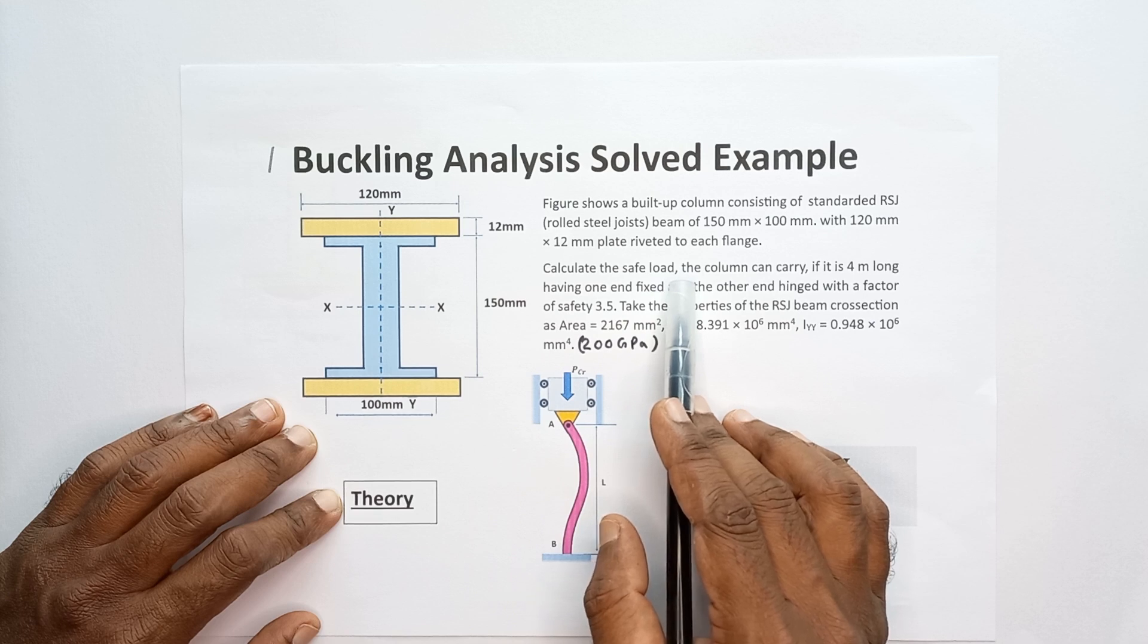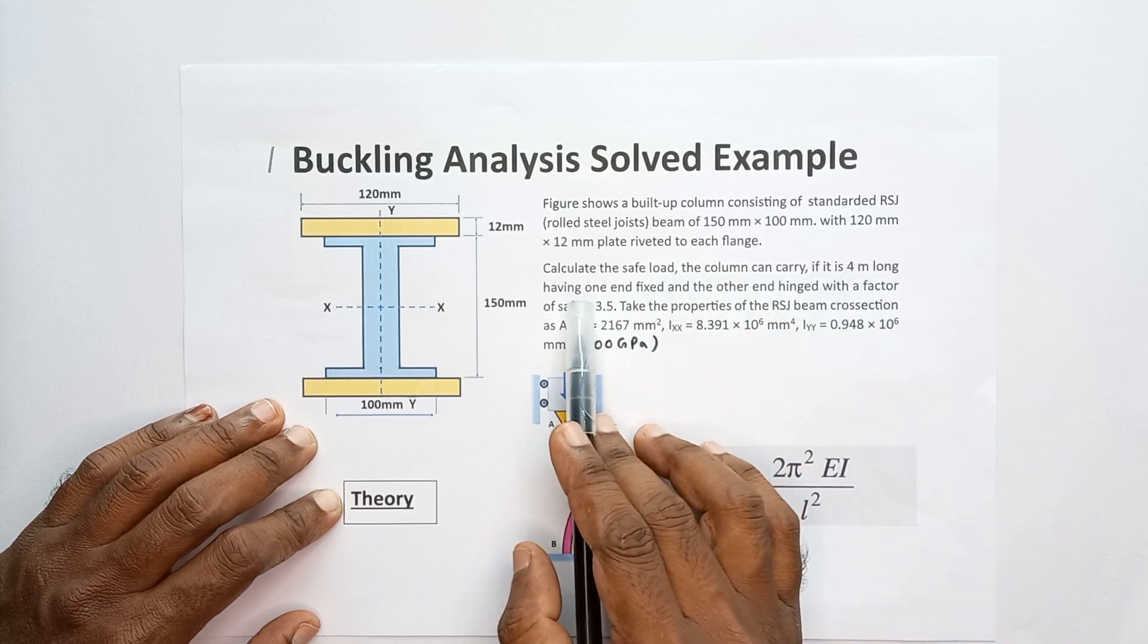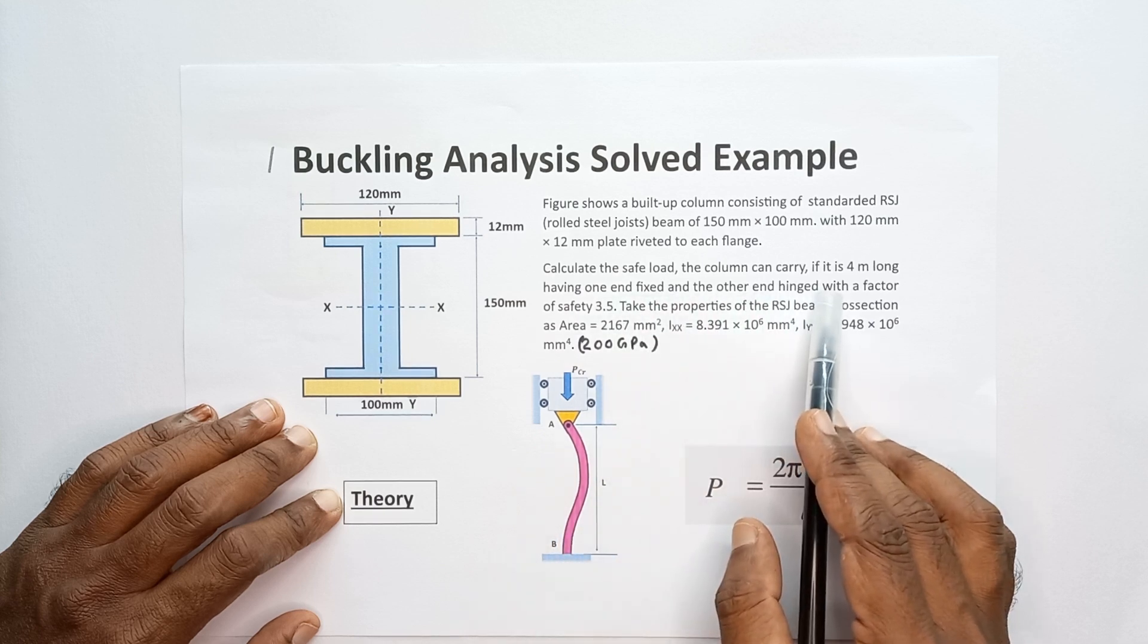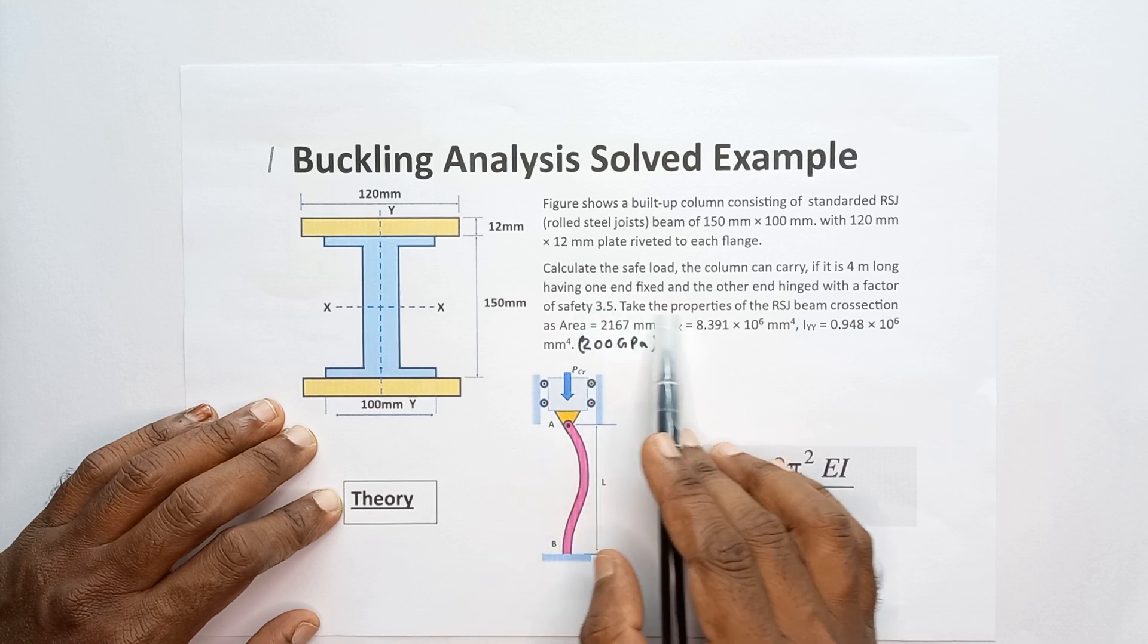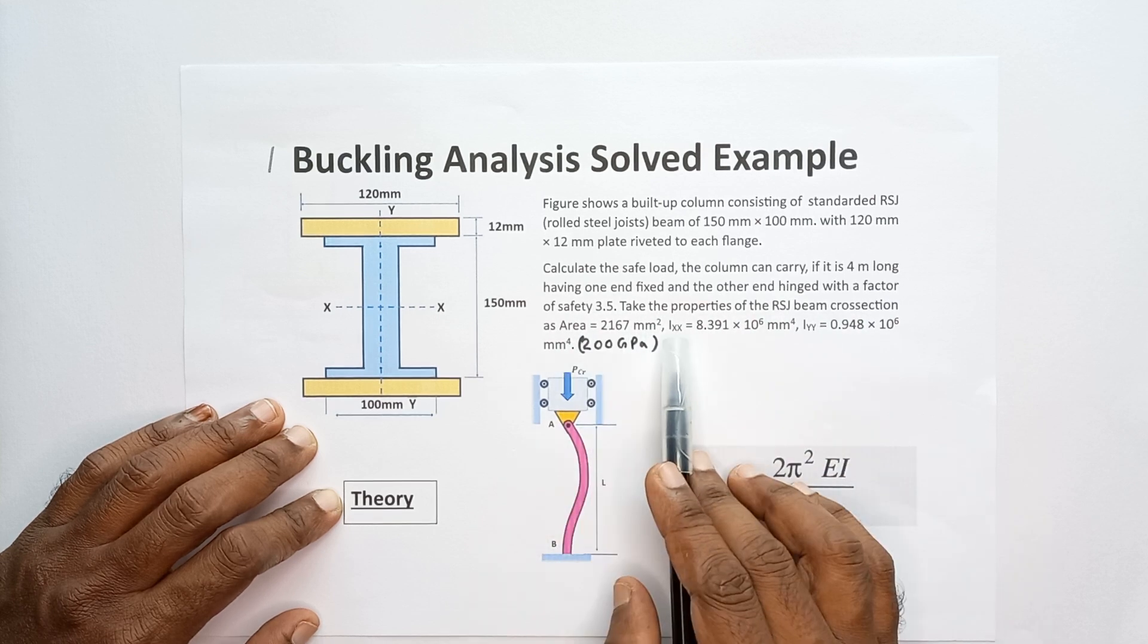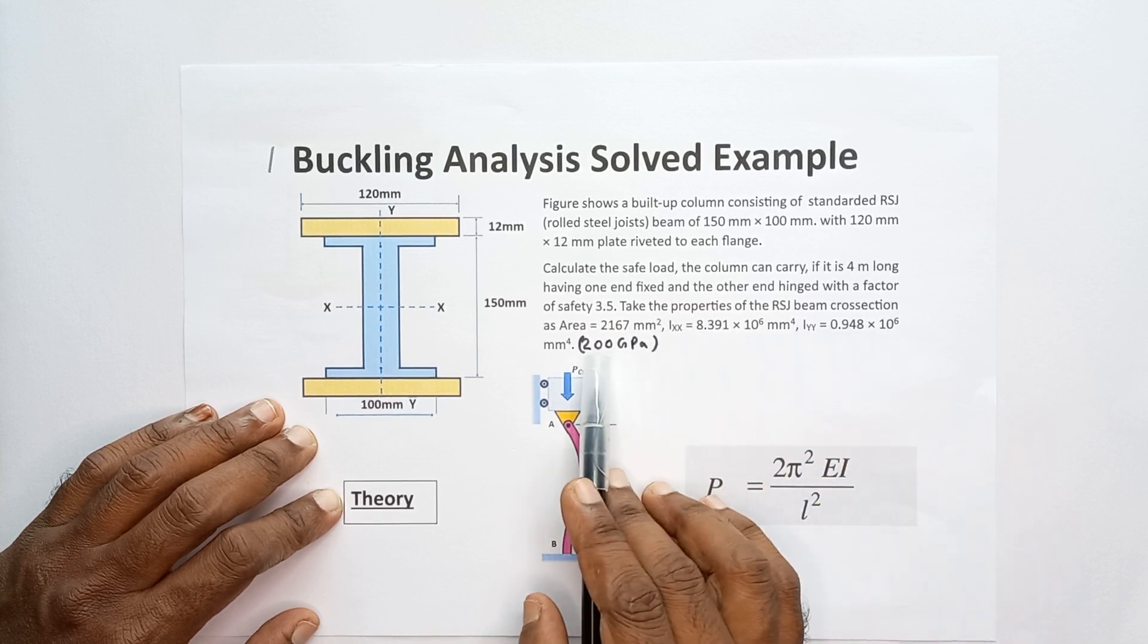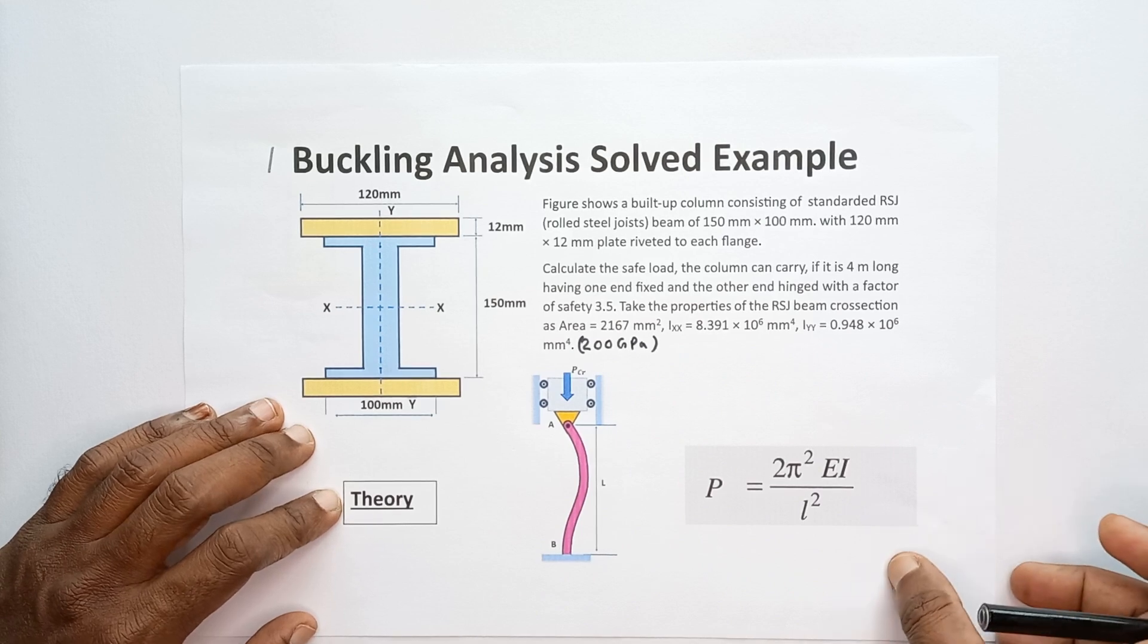Calculate the safe load the column can carry if it is four meters long having one end fixed supported and other end pin supported. Then the factor of safety is given 3.5. Take the properties of RSA beam cross section as area is given and Ixx value is given and Iyy value is given, and also the elastic modulus of the material is equal to 200 GPa. This is the problem given.